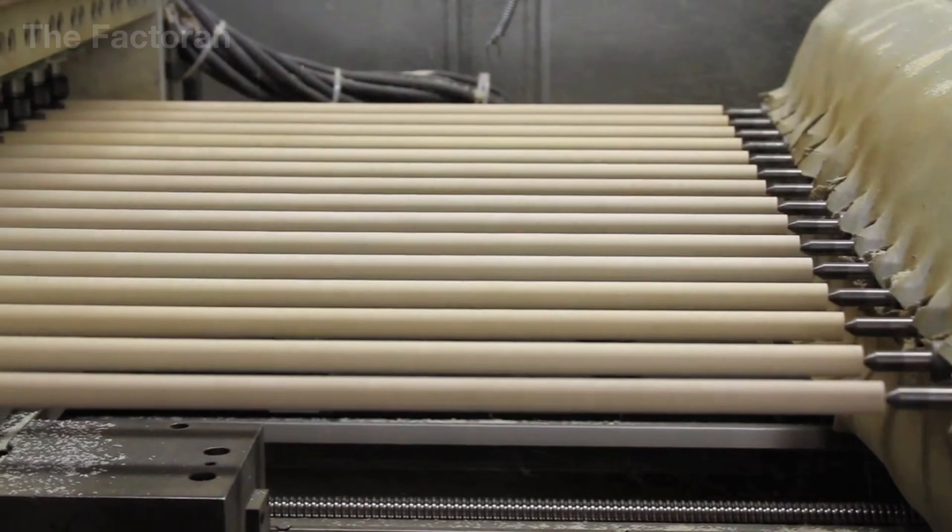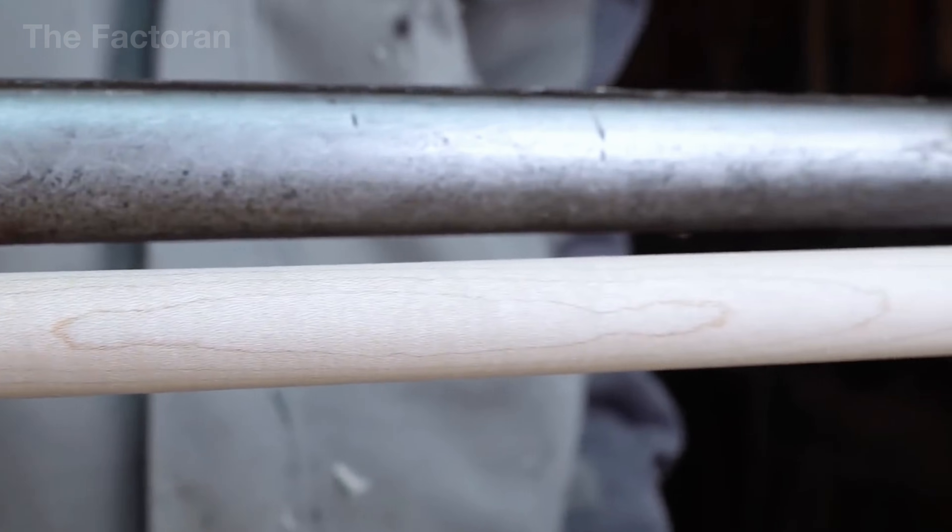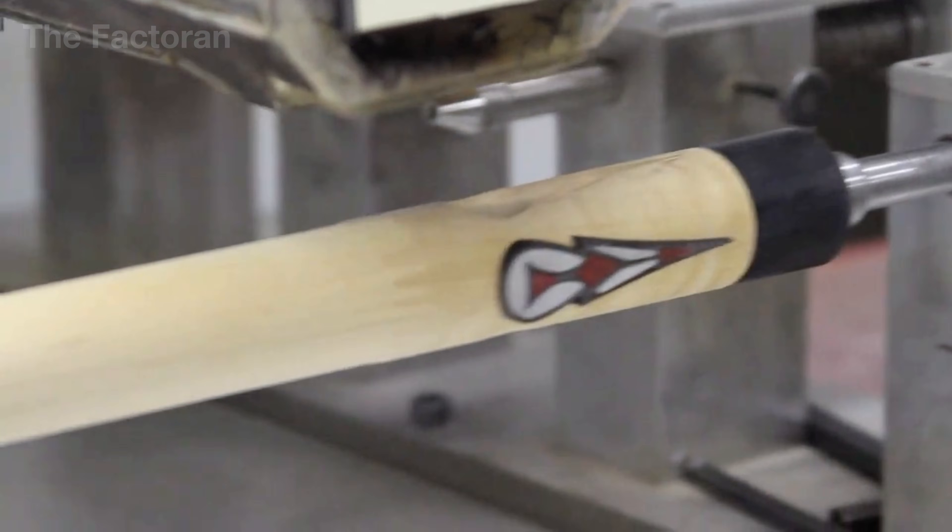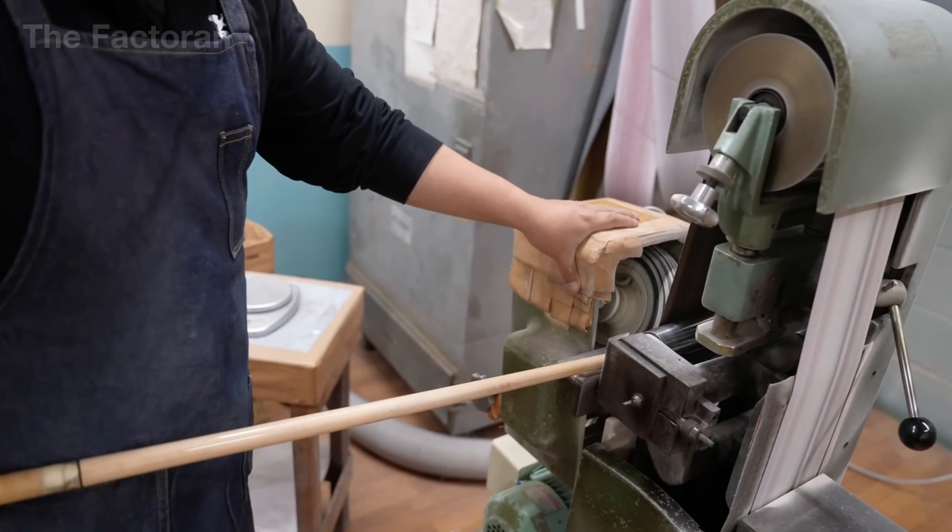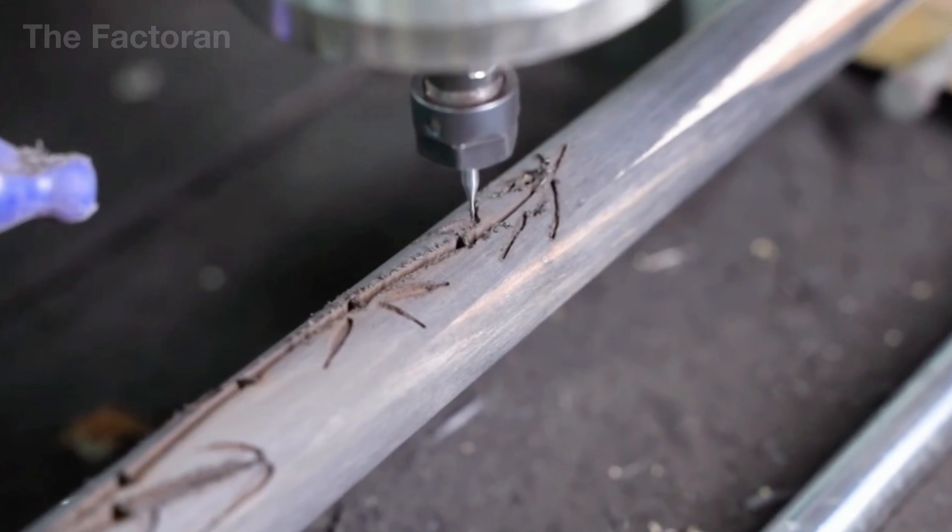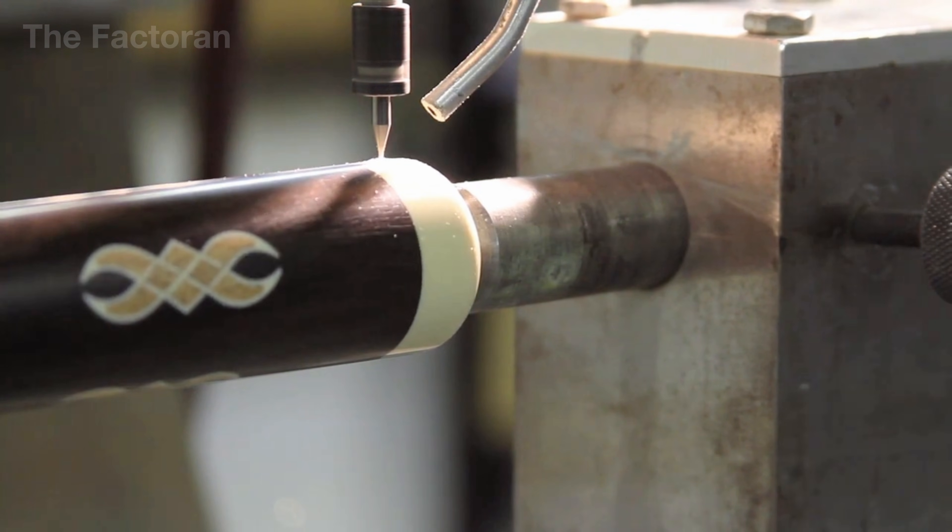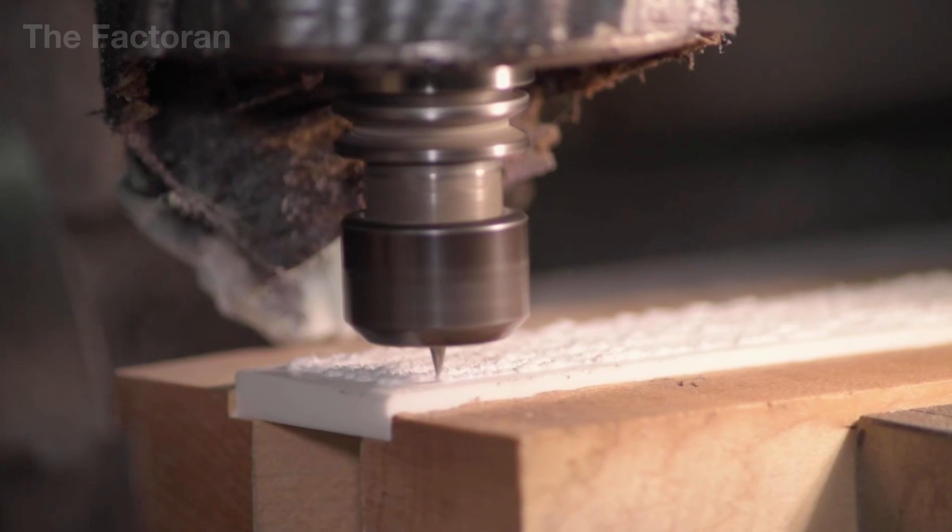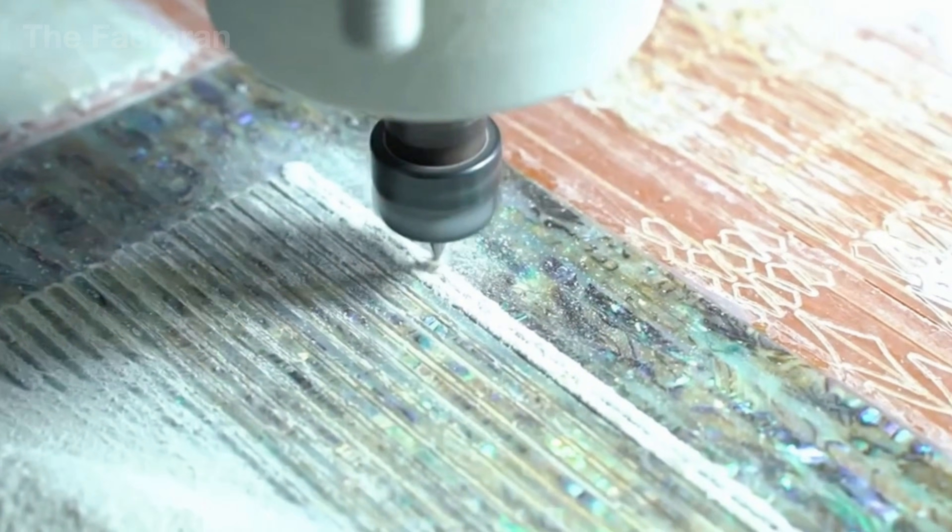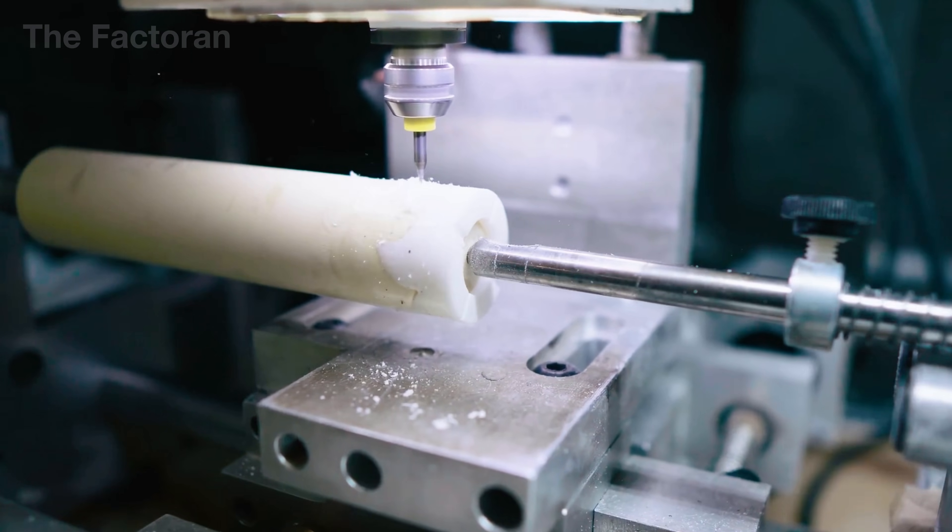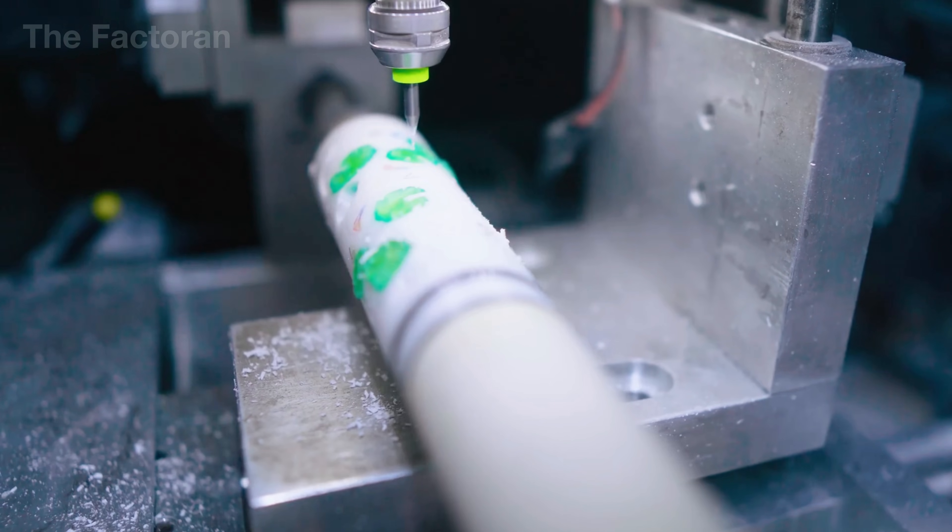When the cue butt has completed its basic shaping, it enters one of the most delicate and refined stages of the entire process: decorative inlay work. The cue is mounted onto a four-axis CNC milling machine, where the cutting tool moves with programmed precision, carving each inlay cavity directly into the wooden surface. At the same time, the machine cuts the inlay pieces themselves from ebony, composite materials or metal, ensuring that the shape of each insert matches its corresponding cavity with absolute accuracy.